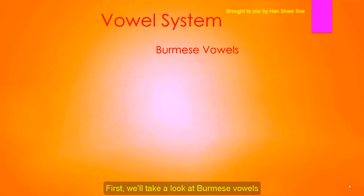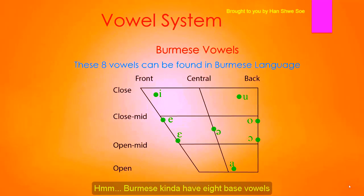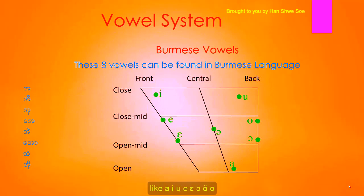First, we'll take a look at Burmese vowels. In this vowel diagram, we can see eight vowels. Burmese has eight base vowels like A, E, U, E, A, O, A, O.